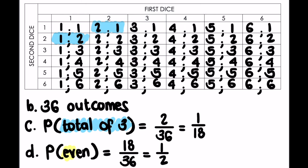Alternatively, you could check which ones are even and which ones are odd. For example: one and one is two, that's even; one and two is three, that's odd; one and three is four, even; one and four is five, odd; one and five is six, even. In the next column: two and one is three, odd; two and two is four, even. Going through the entire table identifying even and odd values, the answer is still one out of two.